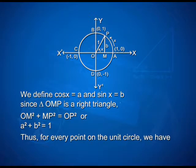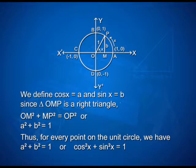Thus, for every point on the unit circle, we have A² plus B² equal to 1, or cos²x plus sin²x equal to 1.